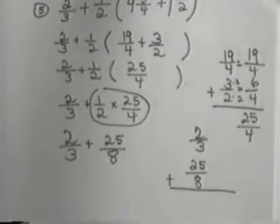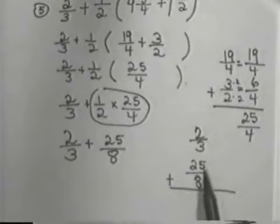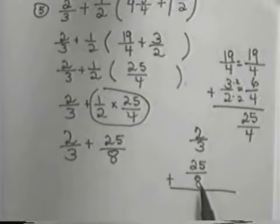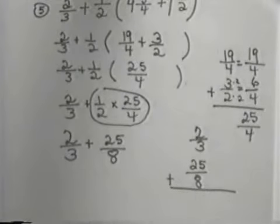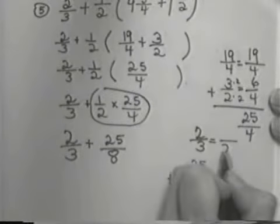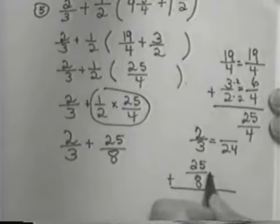So, we need to come to the side again. We have 2/3 and we have 25/8. This time, when we get ready to add, we can't use 8 because 3 won't go into 8. So, we start taking multiples of 8. We try 8 times 2, which is 16, and see if 3 will go into 16. And it won't. So, then we try 8 times 3, which is 24. And 3 will go into that. So, our common denominator is 24.